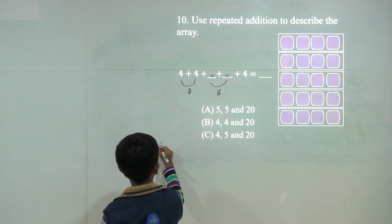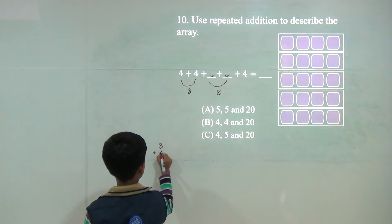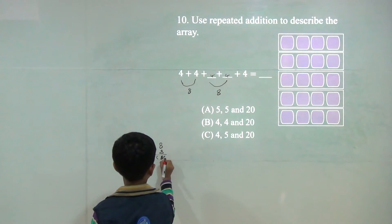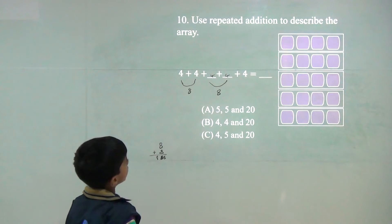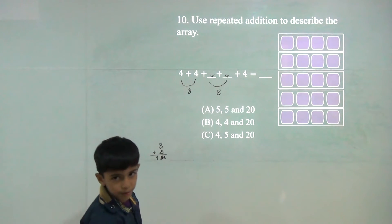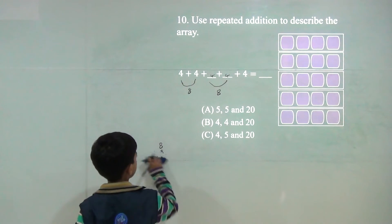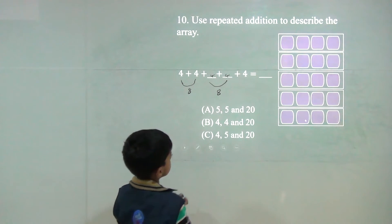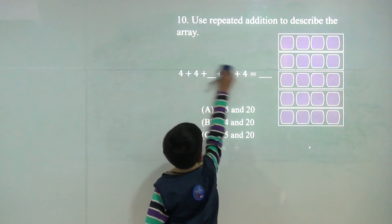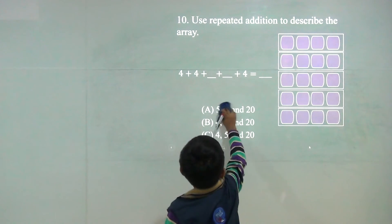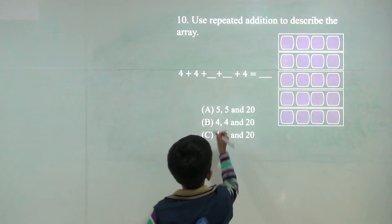8 plus 8 would be 16. 16 plus 4 would be 20. So answer would be 20. So answer would be 20. 4, 4 and 20.